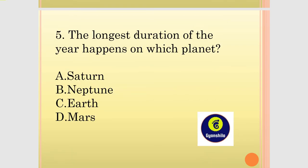The longest duration of the year happens on which planet? The options are Saturn, Neptune, Earth, and Mars. If we have the number of numbers, that means Saturn has the longest year.